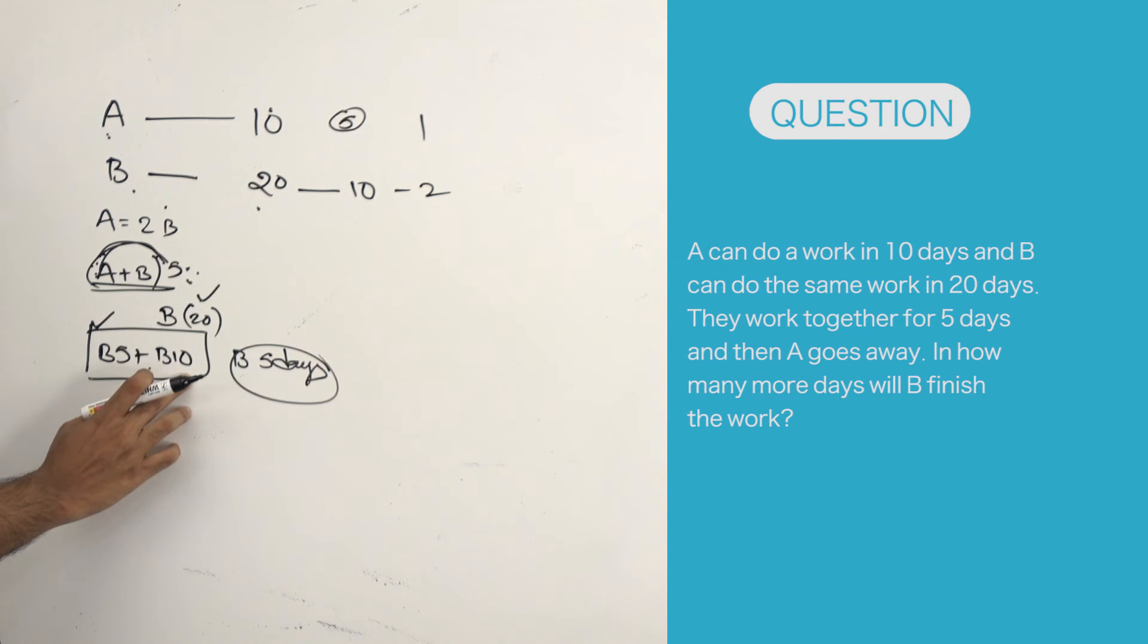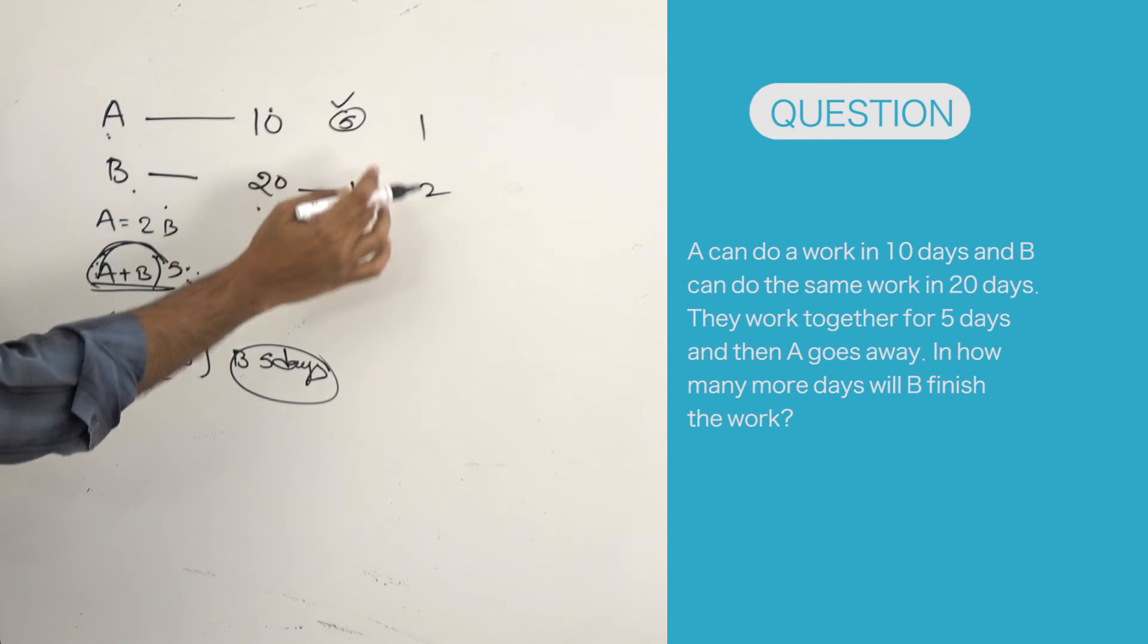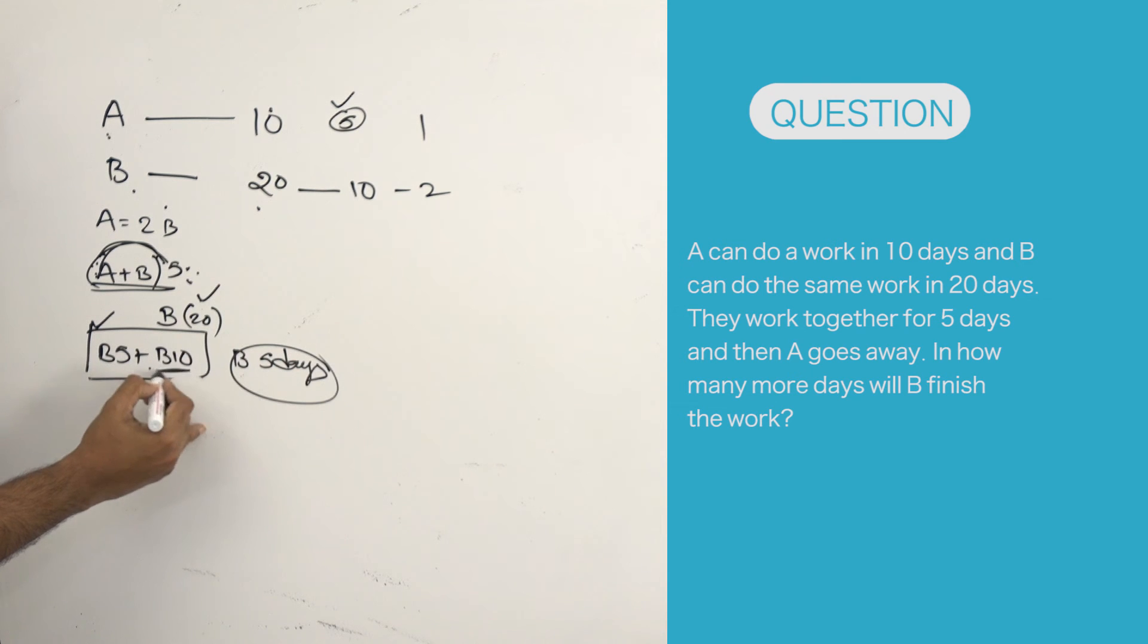So B's 10 days work is finished by A in those 5 days. You already know that A's 5 days work will be equal to B's 10 days work. So B 10 I am keeping. So what is the total work? Actually 20 days B's work.